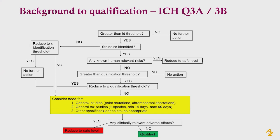Starting at the top, you consider whether the impurity is greater than the identification threshold. If it is, you then have to consider whether you know the structure of the impurity. If that structure tells you there may be human-relevant risks, then you need to reduce those to a safe level. If you don't know of any known human-relevant risks, then you consider whether it's at a level greater than the qualification threshold. If it isn't, you take no action. If it is, you will need to reduce that material to the qualification threshold. If you can't do that, you need to consider further tests such as genotox studies and whether that material needs further tox studies to qualify at the levels seen, and any other appropriate specific tox endpoints. Following that, you will decide whether there are any clinically relevant adverse effects. If there are not, the impurity is qualified and it's safe to proceed with your human studies. If there are adverse effects, then you need to reduce the levels of that impurity to acceptable levels.